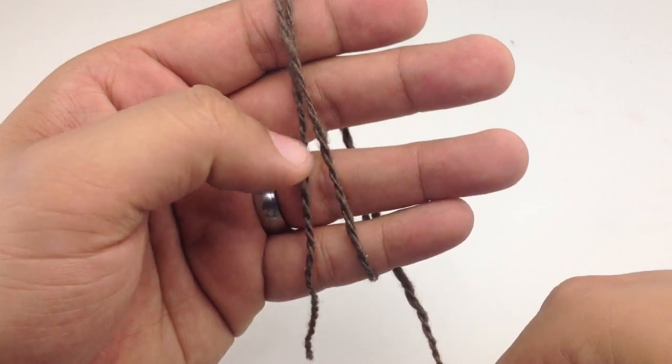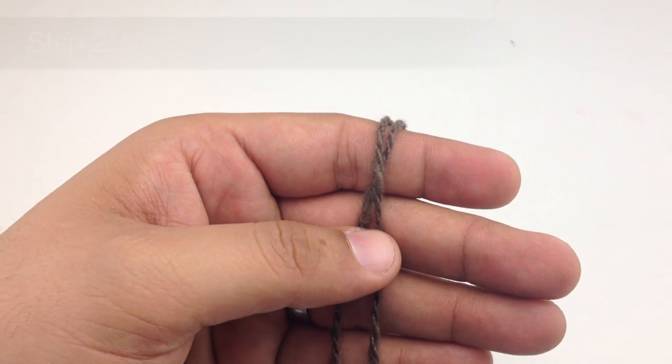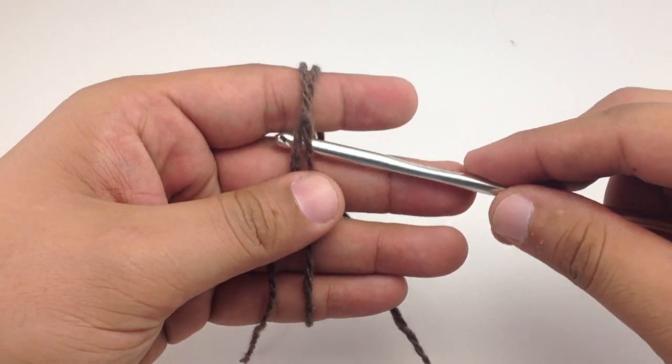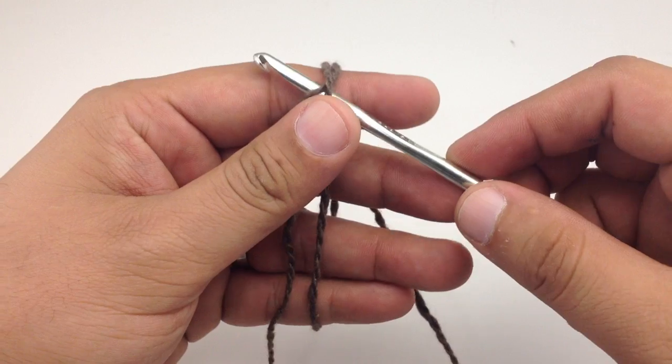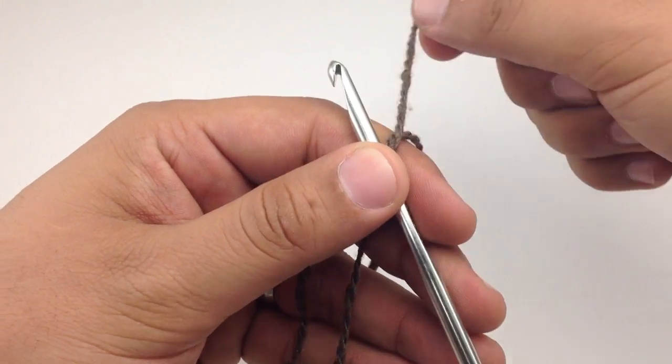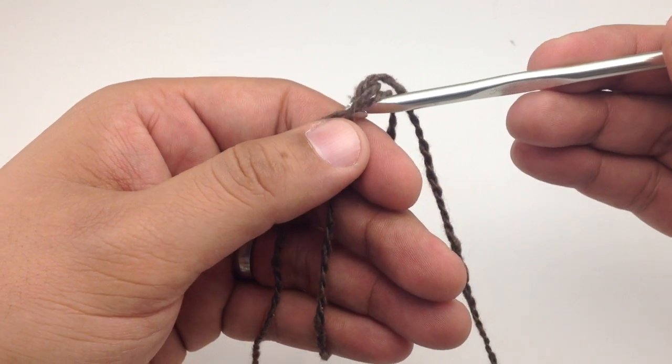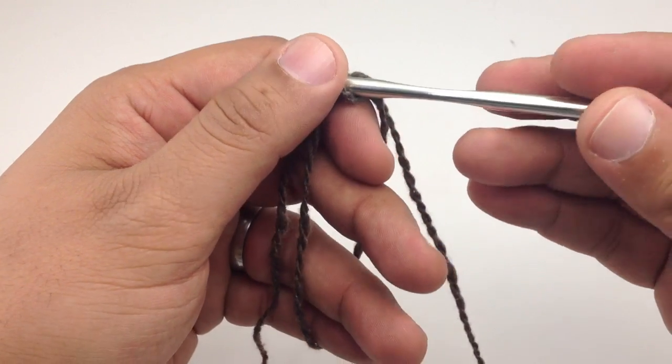Remember we want the tail facing down. We're gonna wrap from the bottom over the top. Step two: we're going to take our crochet hook and insert it right underneath both strands of yarn. Then we want to yarn over our hook and draw that yarn through the big loop that is around our fingers.